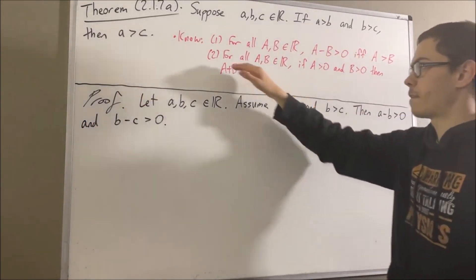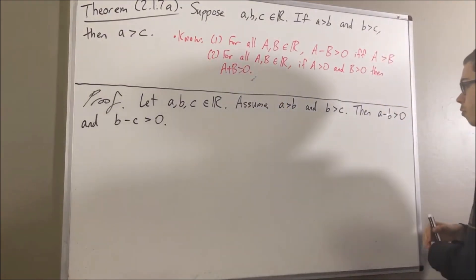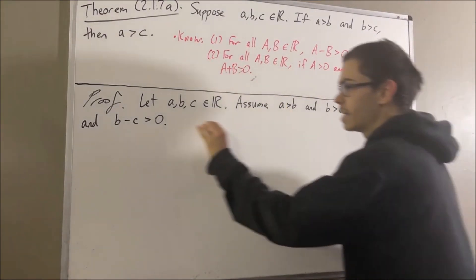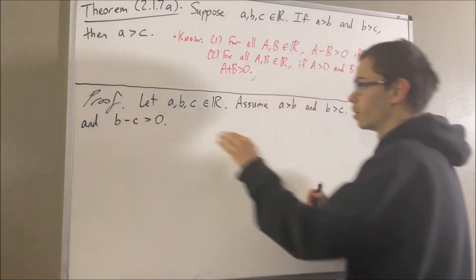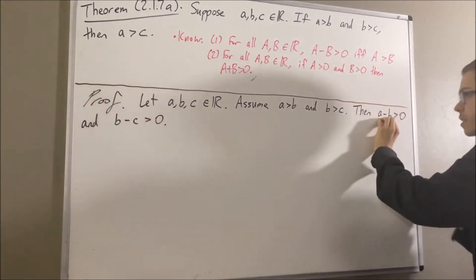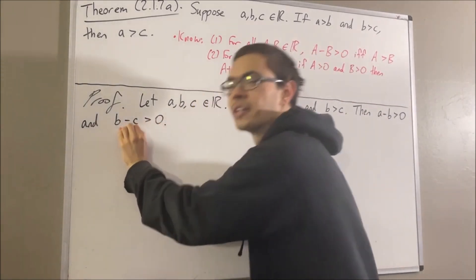But now we can apply fact number two. We have this number is greater than zero, and this number is greater than zero. By fact number two, this number plus this number is greater than zero.